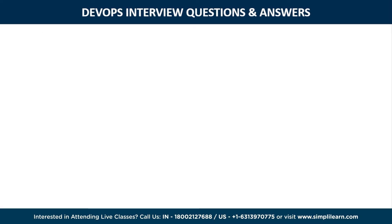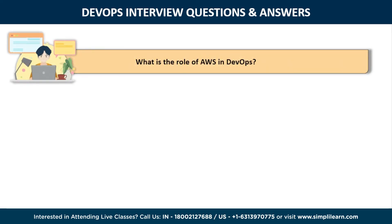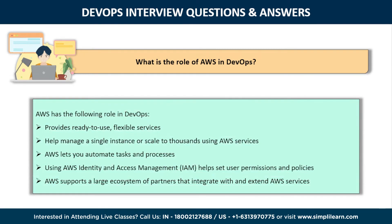Next is: what is the role of AWS in DevOps? AWS has the following roles in DevOps. First, flexible services — it provides ready-to-use flexible services without the need to install or set up software. Second, built for scale — you can manage a single instance or scale to thousands using AWS services. Third, automation — AWS lets you automate tasks and processes, giving you more time to innovate. Fourth, secure — using AWS Identity and Access Management, you can set user permissions and policies. And fifth, large partner ecosystem — AWS supports a large ecosystem of partners that integrate with and extend AWS services.